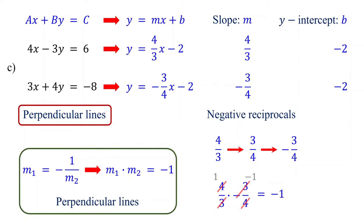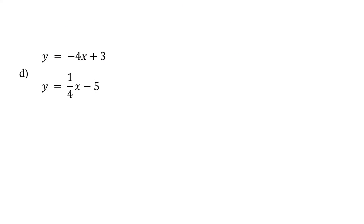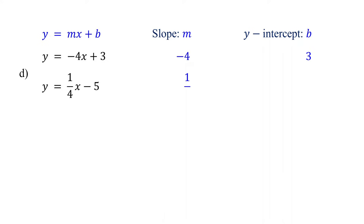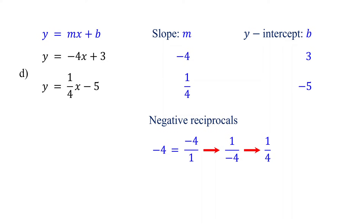Now it's your turn. Can you determine whether these lines are perpendicular? Both equations are in slope-intercept form, so you can directly identify the slopes and y-intercepts. Now check if the slopes are negative reciprocals. We can write negative 4 as a fraction, negative 4 over 1. Taking the reciprocal gives 1 over negative 4, and changing the sign gives positive 1 fourth, which matches the slope of the second equation. So the slopes are negative reciprocals. You can also verify this by multiplying them: negative 4 times 1 fourth equals negative 1. When the product of two slopes equals negative 1, the lines are perpendicular. Therefore, these lines are perpendicular.